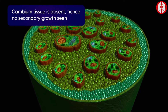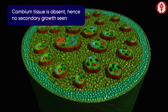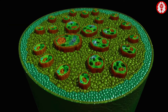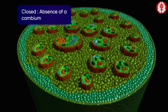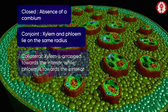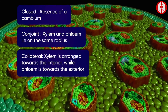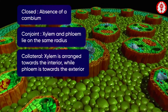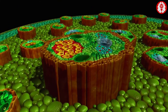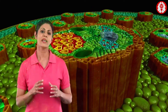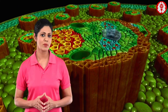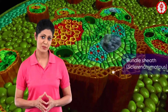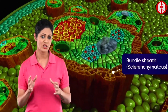The cambium tissue being absent, the vascular bundle is termed closed, conjoint and collateral.